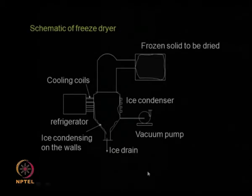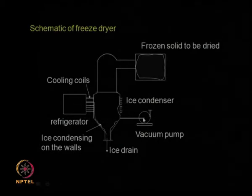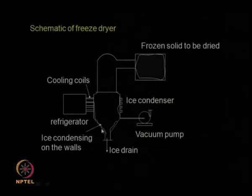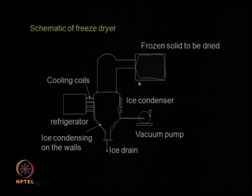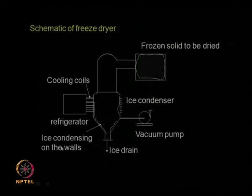A schematic of a large-scale industrial freeze dryer: frozen solid in a big container needs to be dried. Water has become ice. There is a refrigeration system and a vacuum pump. The ice becomes vapor, travels down and condenses — forming ice on the wall again. The vacuum pump provides the required vacuum while the temperature is high enough for ice to go directly into vapor, which is condensed and collected. The refrigeration system keeps the surface temperature low. That is how a large-scale freeze drying unit works.